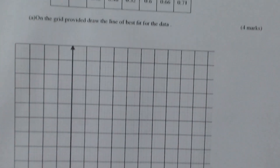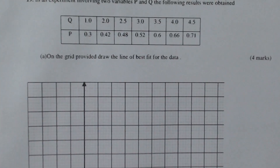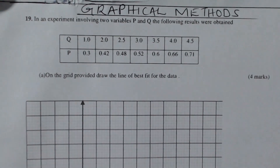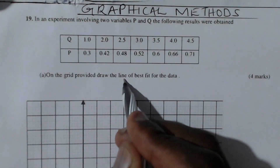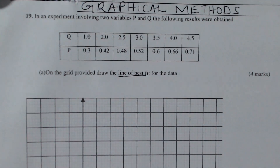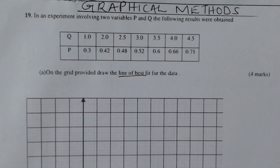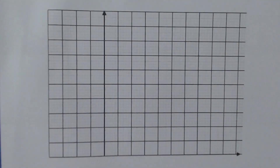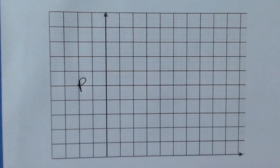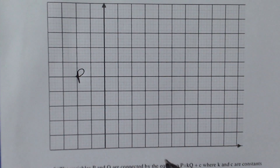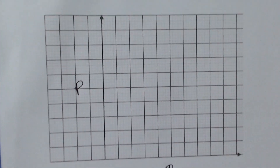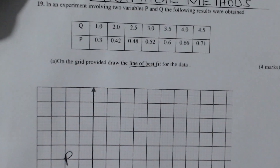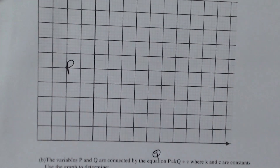Let's go to the first part where we use this data to draw the line of best fit. To draw this we shall plot p against q — p on the y-axis and q on the x-axis. The first thing is to look at the values and determine the scale. For q, the values range from 1.0 to 4.5.